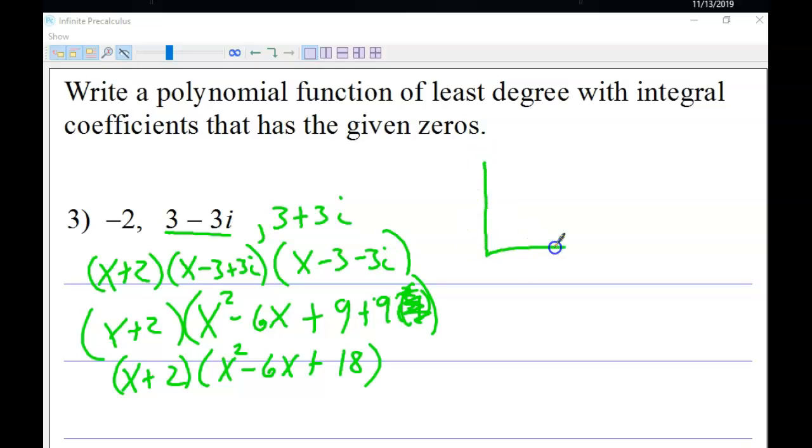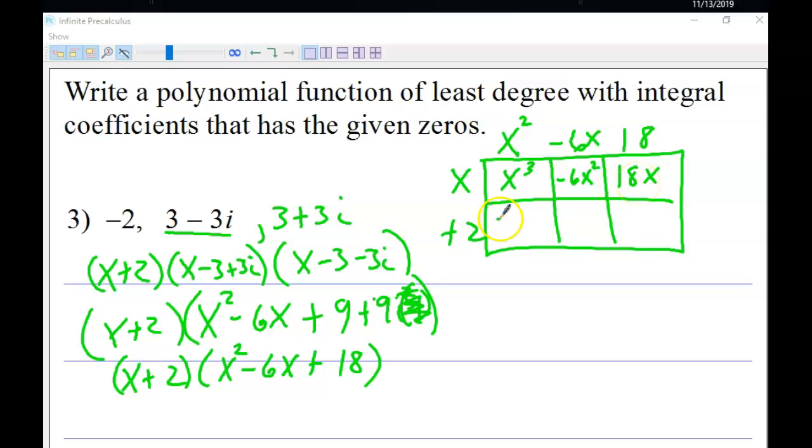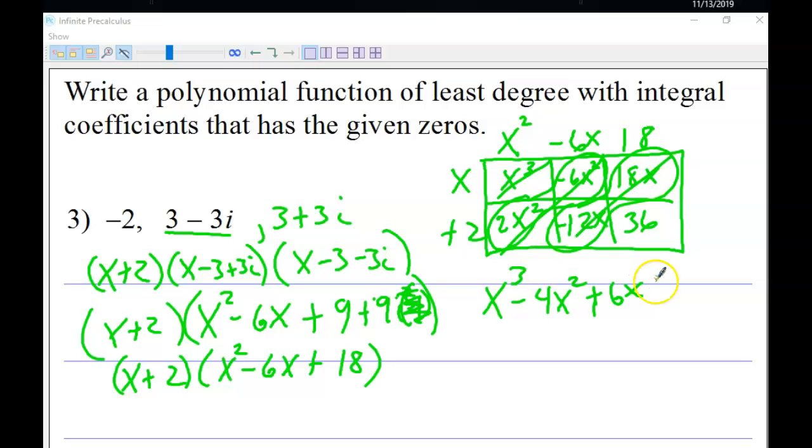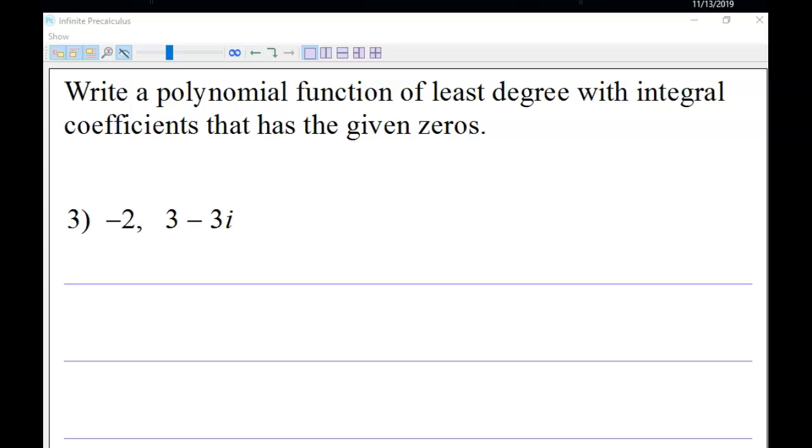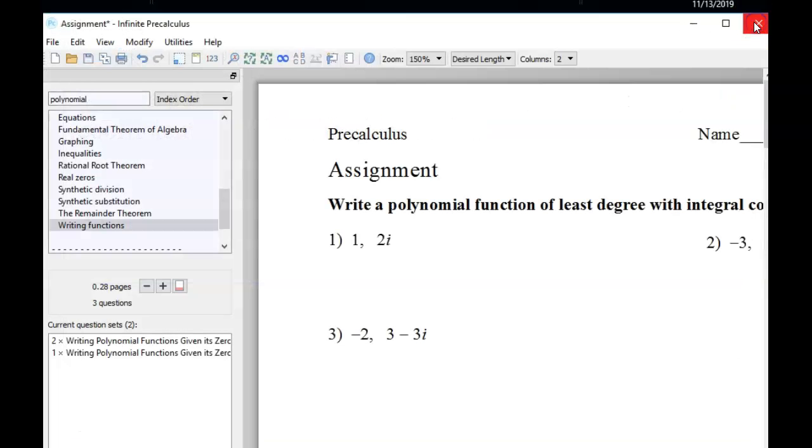So that's the conjugate root theorem. And it basically just states that anytime you have an irrational or an imaginary root, they always come in pairs, conjugate pairs. Once again, that only applies to irrational or imaginary roots. And since we know those roots, we can go ahead and work backwards and turn these roots into a polynomial. So final answer here will be x³ - 4x² + 6x + 36. That's the end of that lesson. Hope you enjoyed it. The next lesson to follow will build on this knowledge to continue helping us work with polynomials.